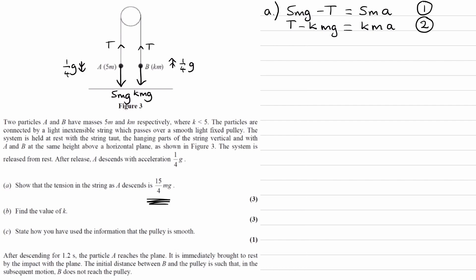So we're trying to show that the tension in the string is this. We actually have the acceleration, so I'm going to change both of these a's to 1/4g. And if you look at equation 1, we can rearrange that for T. I'll bring the T to the right-hand side. So now it's by itself.